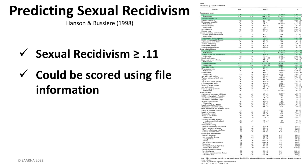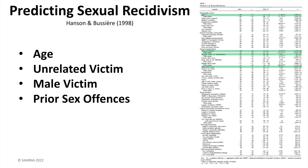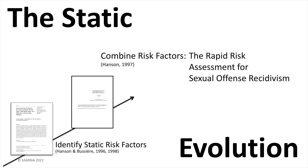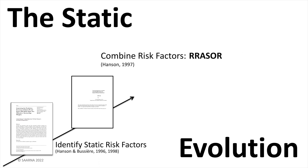The predictive validity of the six potential items was tested through stepwise regression in seven development samples, and then replicated in an eighth validation sample. Four items provided non-redundant information on risk and formed the Rapid Risk Assessment for Sex Offense Recidivism, or the RRASOR.